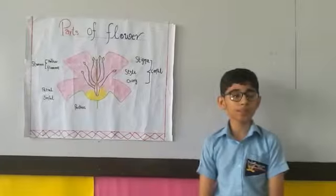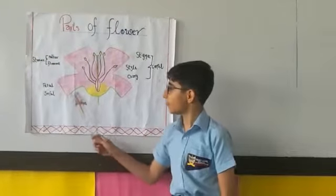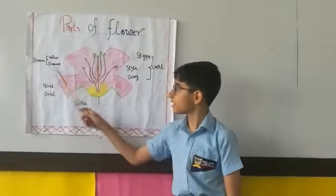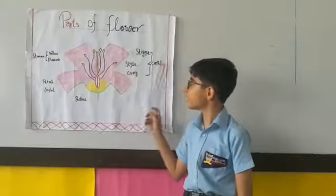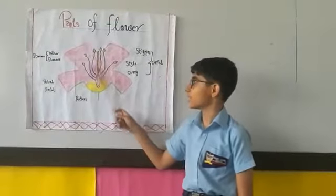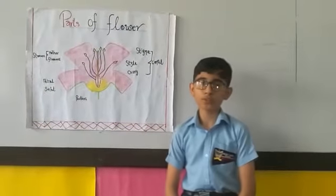Now I am telling you there are 10 parts of flowers: pedicel, sepals, petals, stem, anther, filament, carpel, stigma, receptacle. These are the 10 parts of flowers.